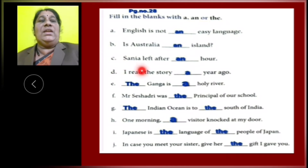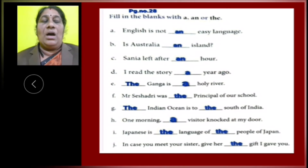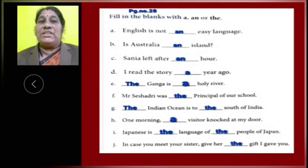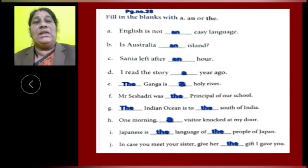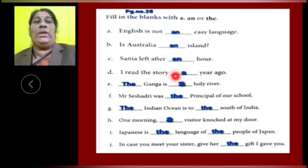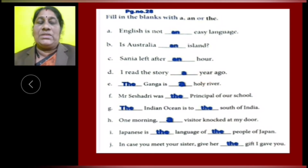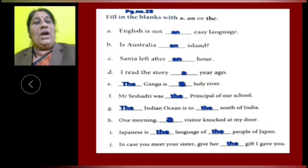C: Sanya left after an hour. Here, R started with a consonant letter but H is silent, and this word begins with the vowel sound O, so article AN is used. D: I read the story a year ago. Here, year is a consonant letter word, so we have to use article A.